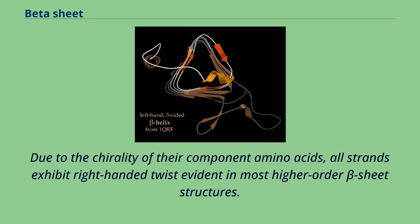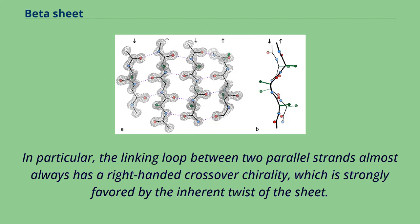Due to the chirality of their component amino acids, all strands exhibit right-handed twist evident in most higher order beta sheet structures. In particular, the linking loop between two parallel strands almost always has a right-handed crossover chirality, which is strongly favored by the inherent twist of the sheet.